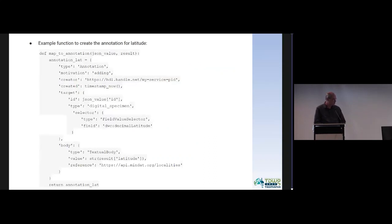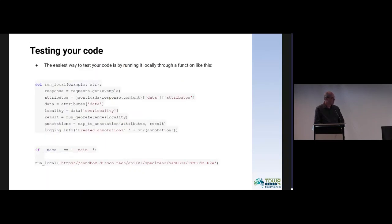This is an example function to create the annotations for the latitudes. To test your code without running it within the DiSSCo infrastructure, you can create local tests and retrieve specimen objects directly from our API instead of from the Kafka queue.